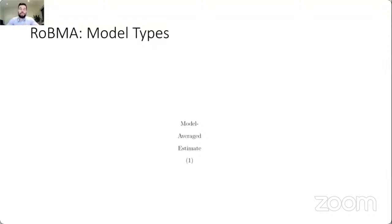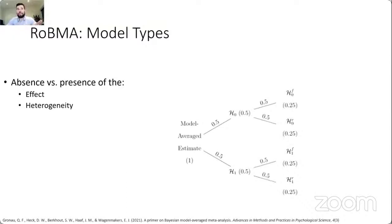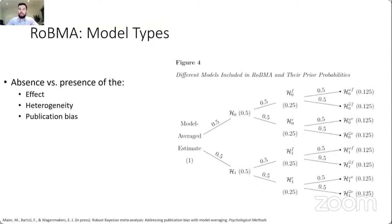To split the ensemble, when obtaining the model-averaged estimate you can look at the different components in terms of whether a model specifies absence or presence of the effect. You split prior model probabilities equally across those two model pairs, then equally across models of presence or absence of heterogeneity, and then publication bias. At the end, you have eight different model types specifying all possible combinations of the presence or absence of the effect, heterogeneity, and publication bias — each model type ending up with the same prior probability.